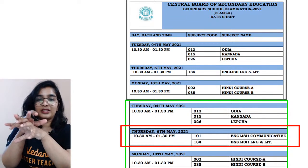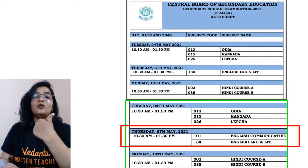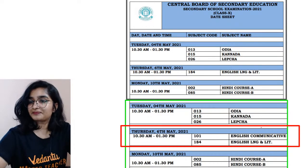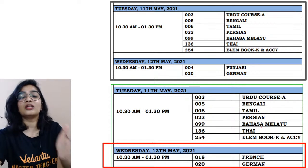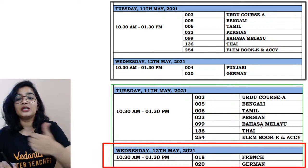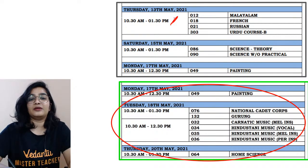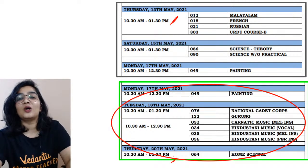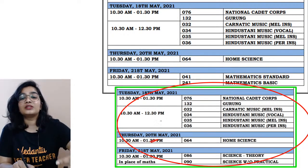The top one that is shown is the previous date sheet. This is the new one. If you see, English Language and Literature was on 6th May; now you have English Communicative Language and English Communicative Paper 2 on the same day. Then on 12th May, you had Punjabi and German, but now in the revised date sheet you will have French and German. So Punjabi exam will be on 13th May. And from 18th May onwards it will be the same, and on 28th May there won't be any changes.